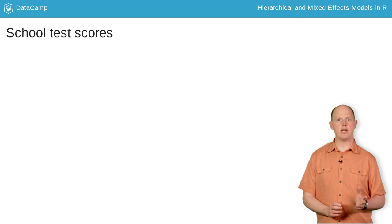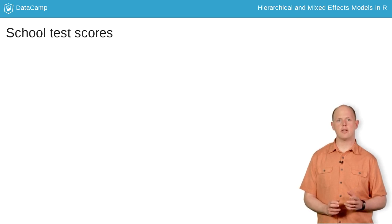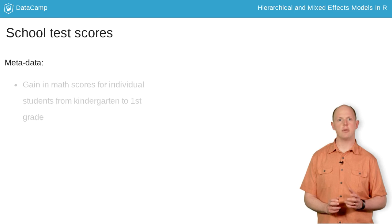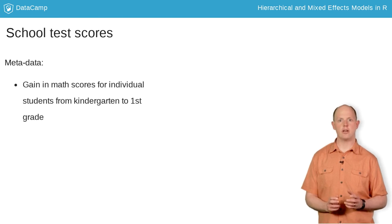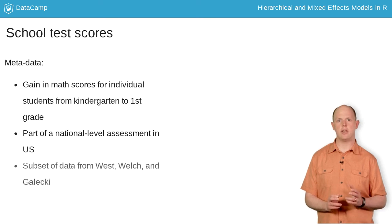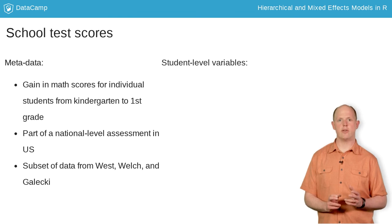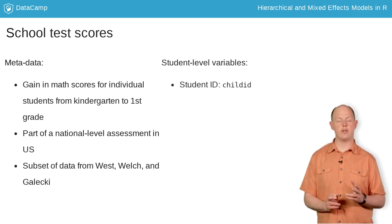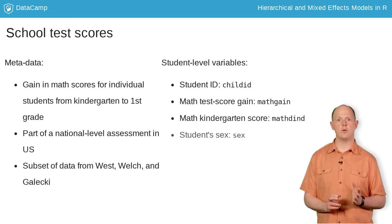In the following exercise, we'll explore a data set of test scores collected from elementary school children between kindergarten and first grade to assess how their math knowledge improved. The data is a subset of a national level exam given across the United States and is from a book by West and collaborators. The data set contains several variables at different levels: the individual student level, the classroom teacher level, and the school level.